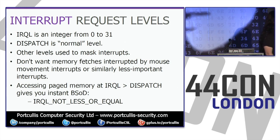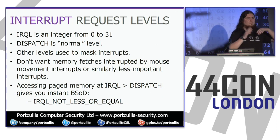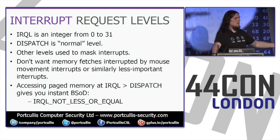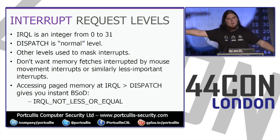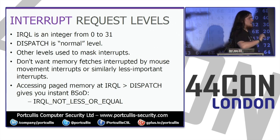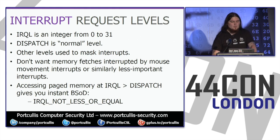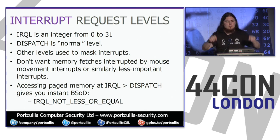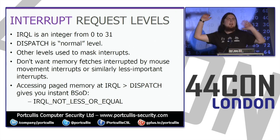Interrupt masking is essentially 'don't tell me about anything happening below this level.' I don't want to know about the mouse moving if I'm in the middle of servicing a memory fetch — something really important. I don't care about my network card having a new packet if I'm handling something super critical. Dispatch is what's considered the normal level — at dispatch level, anything can happen, I can be told about anything.